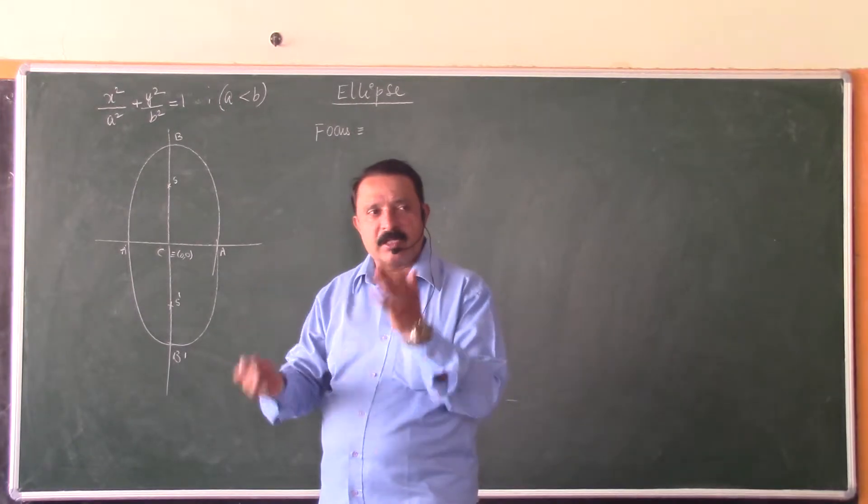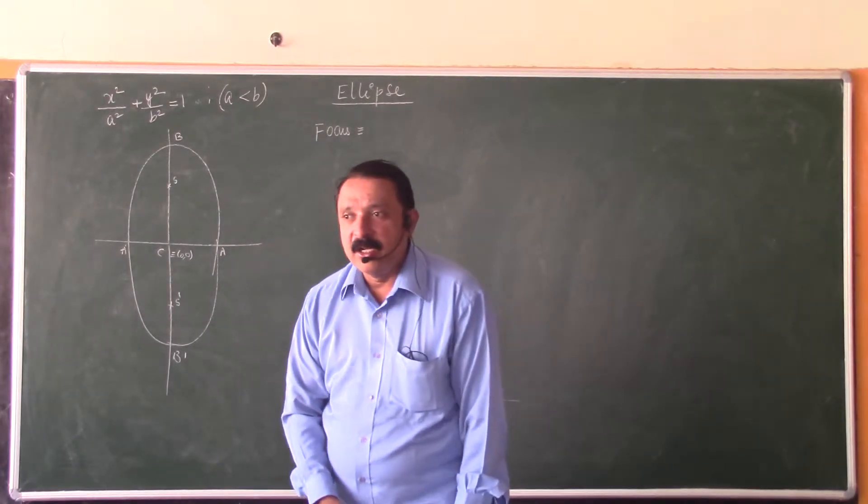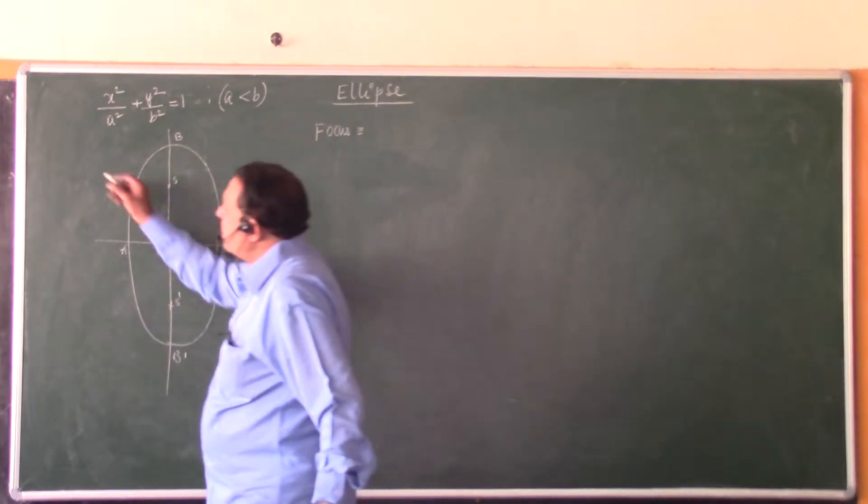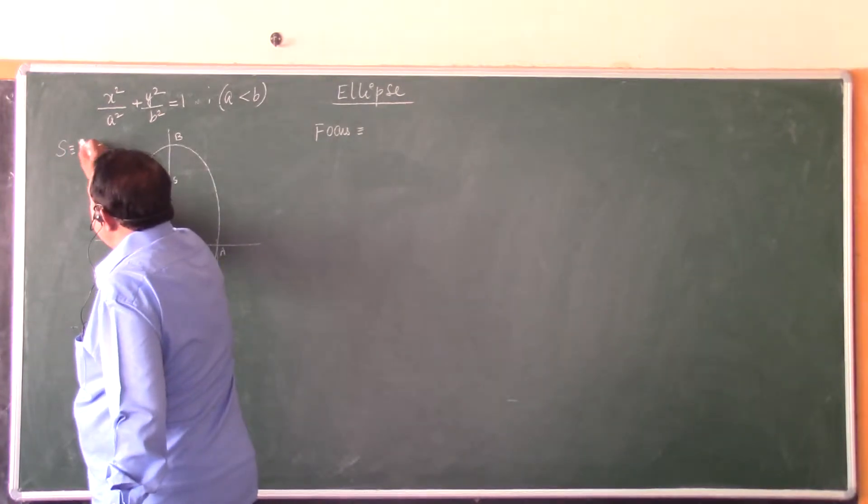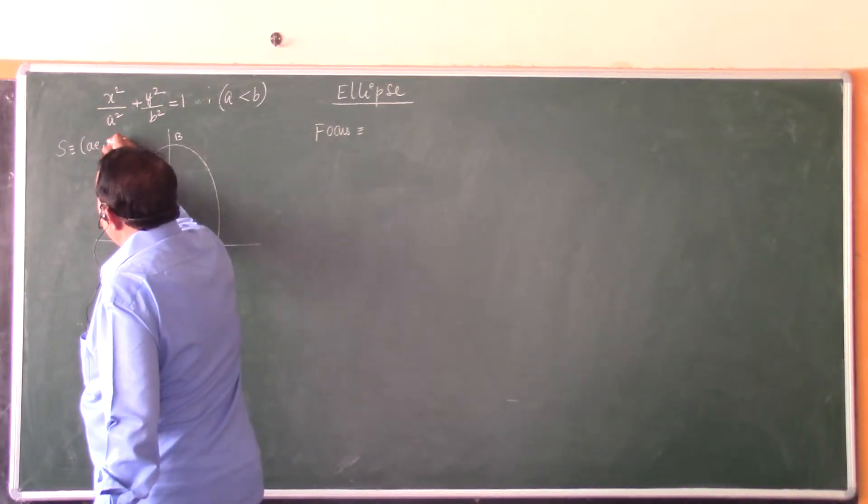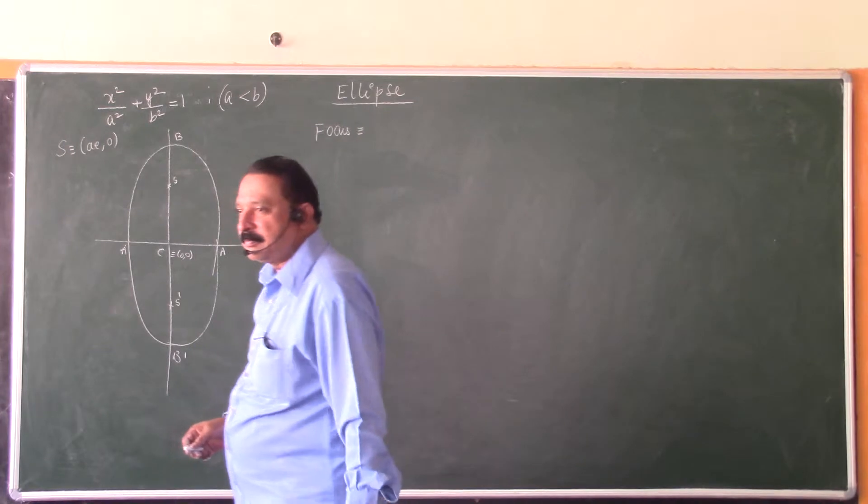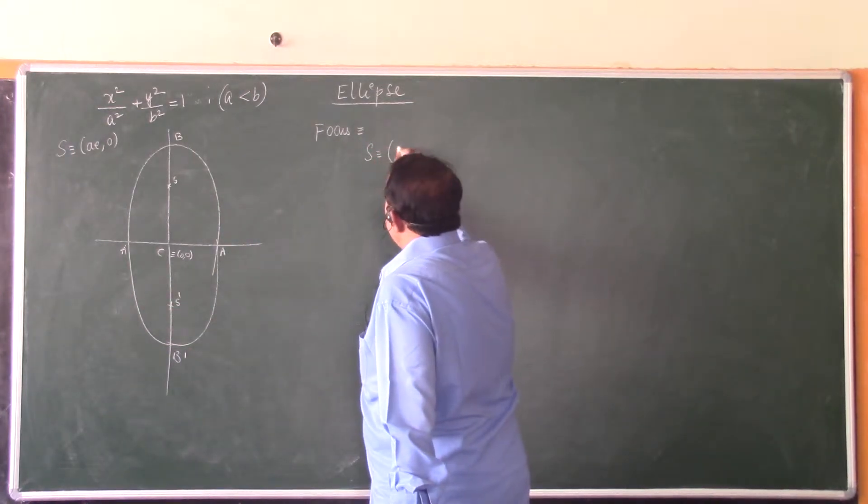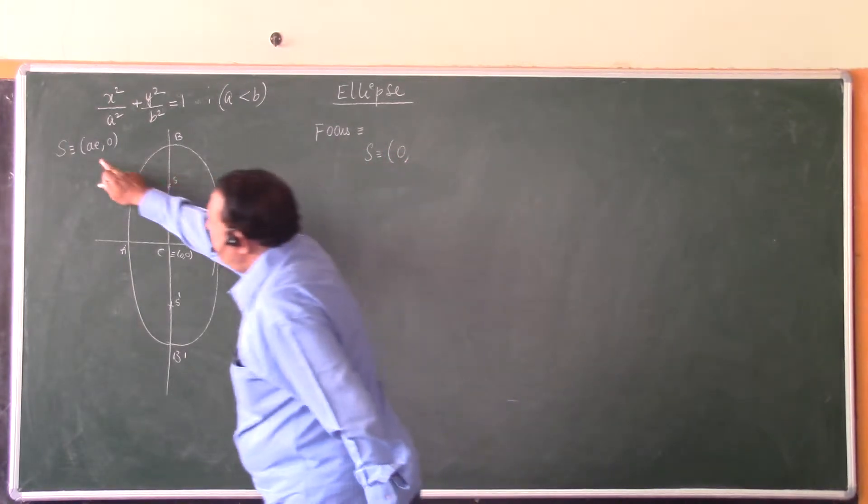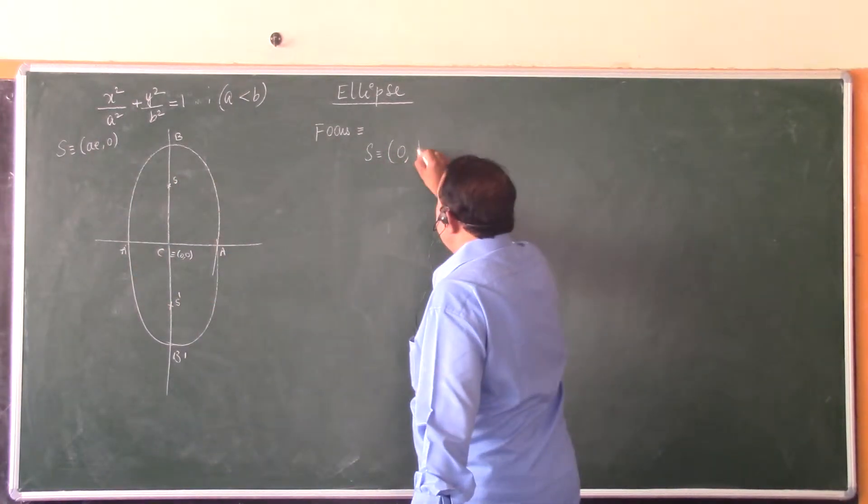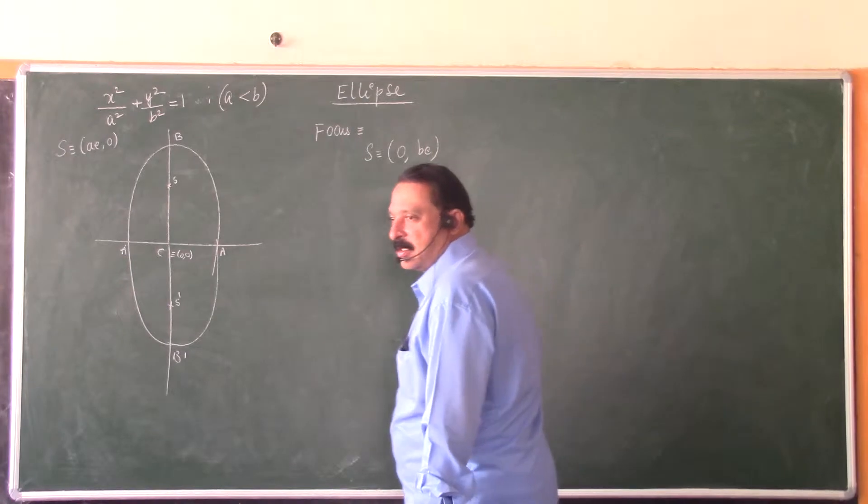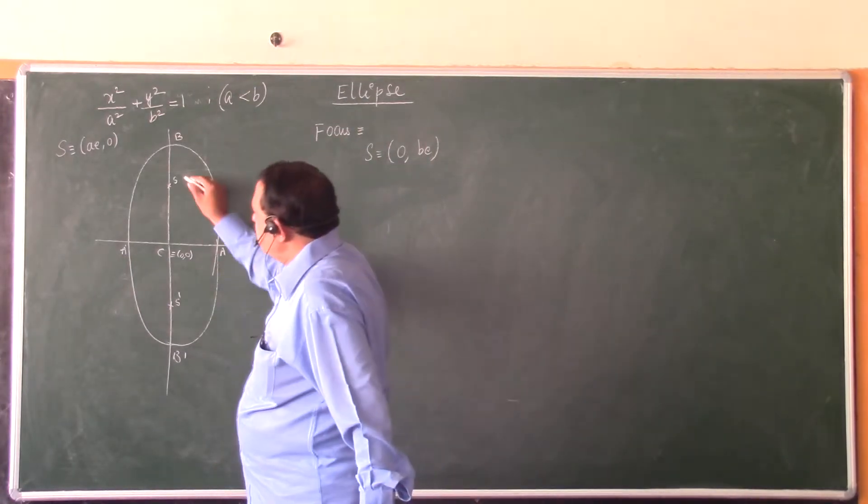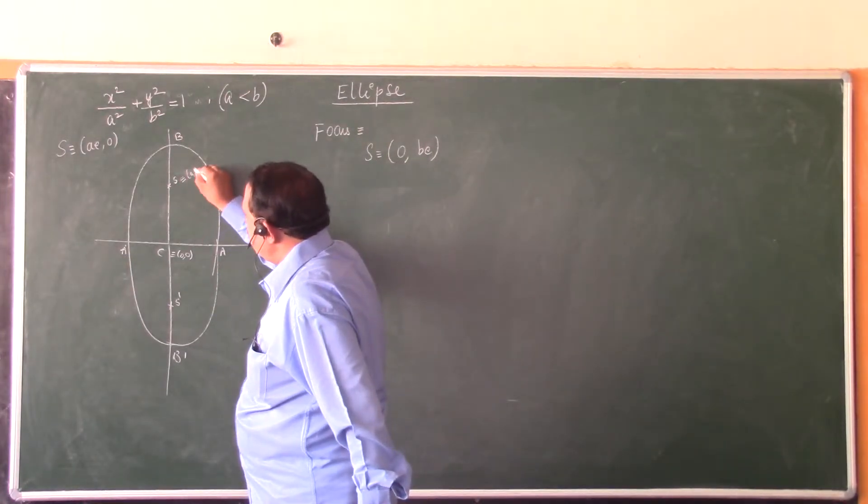So you have to just interchange the x-details and y-details. What is the focus in the other form? a greater than b? ae, 0. So here, the first focus is, you will write 0 and instead of ae, you will write be.